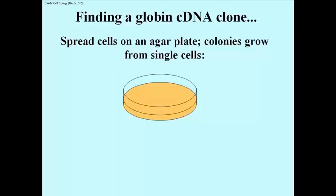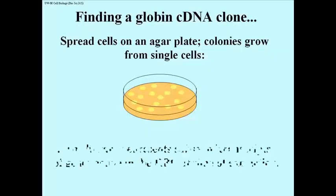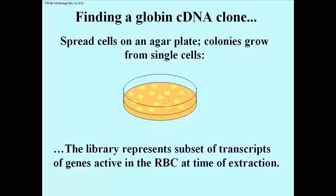Well, bacteria are grown on agar dishes, shown here. What you do is spread the cells of your library onto an agar plate, and colonies will grow from single cells. You spread the cells under conditions where there are not too many cells on every plate, so you get a few hundred colonies. So now the library has been displayed on an agar plate.